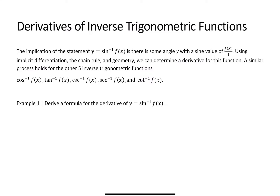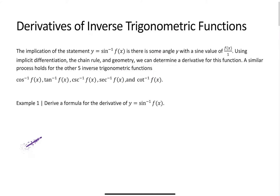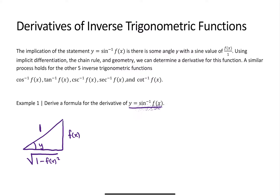For example one, we have to derive a formula for sine inverse of f of x. Let's do a geometric explanation of what's going on. We have sine inverse of f of x is equal to y, which means there is some angle y whose sine is the opposite side, f of x, divided by a hypotenuse value of 1.